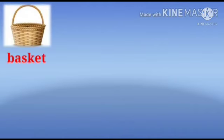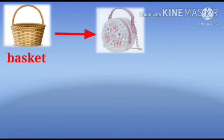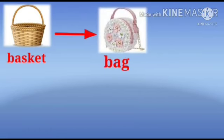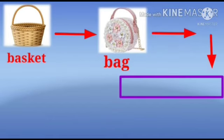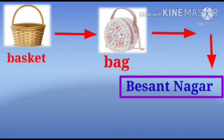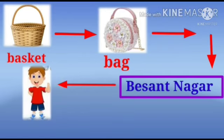Now see and name them. Basket — the spelling of basket is B-A-S-K-E-T. There is a bag — spelling of bag is B-A-G. There is one nameplate: Basanagar, spelling B-A-S-A-N-A-G-A-R. There is one boy — spelling of boy is B-O-Y.